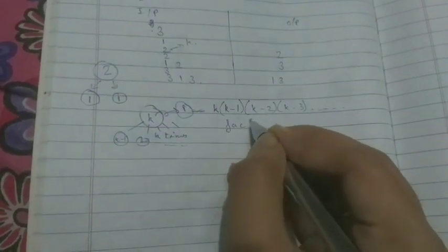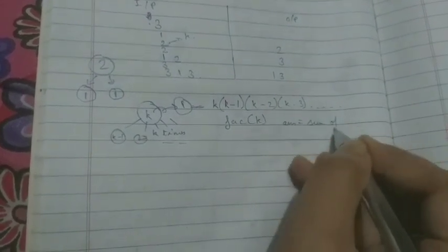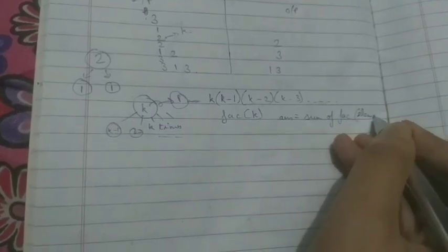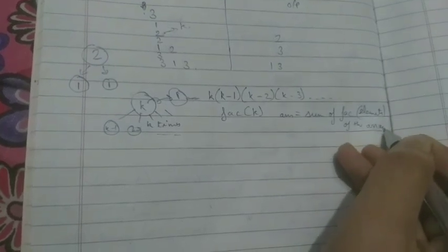The answer would be sum of factorials of the elements of the array. This is the basic thing.